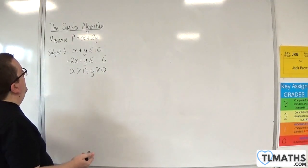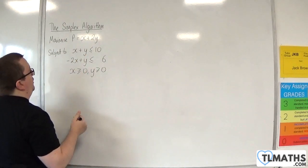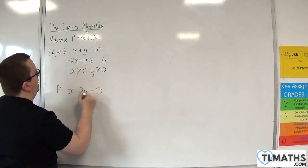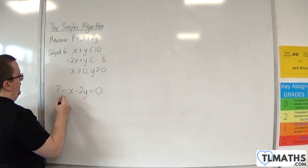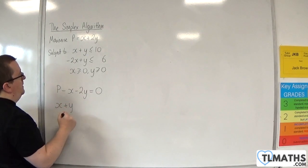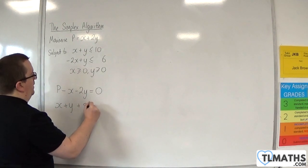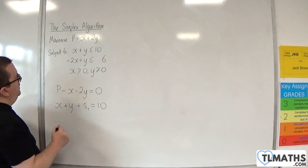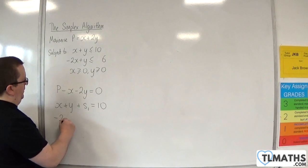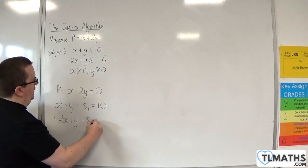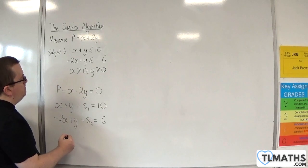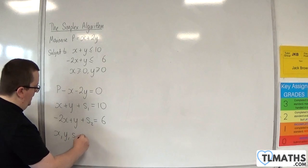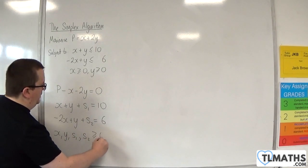So let's run this through. So we're going to maximize p equals x plus 2y, so we're going to have p minus x minus 2y is equal to 0. x plus y is less than or equal to 10, so x plus y plus s1 is equal to 10, adding in a slack variable. Then we're going to have minus 2x plus y plus s2 is equal to 6. And then, of course, we've got x, y, s1, and s2 are all greater than or equal to 0.